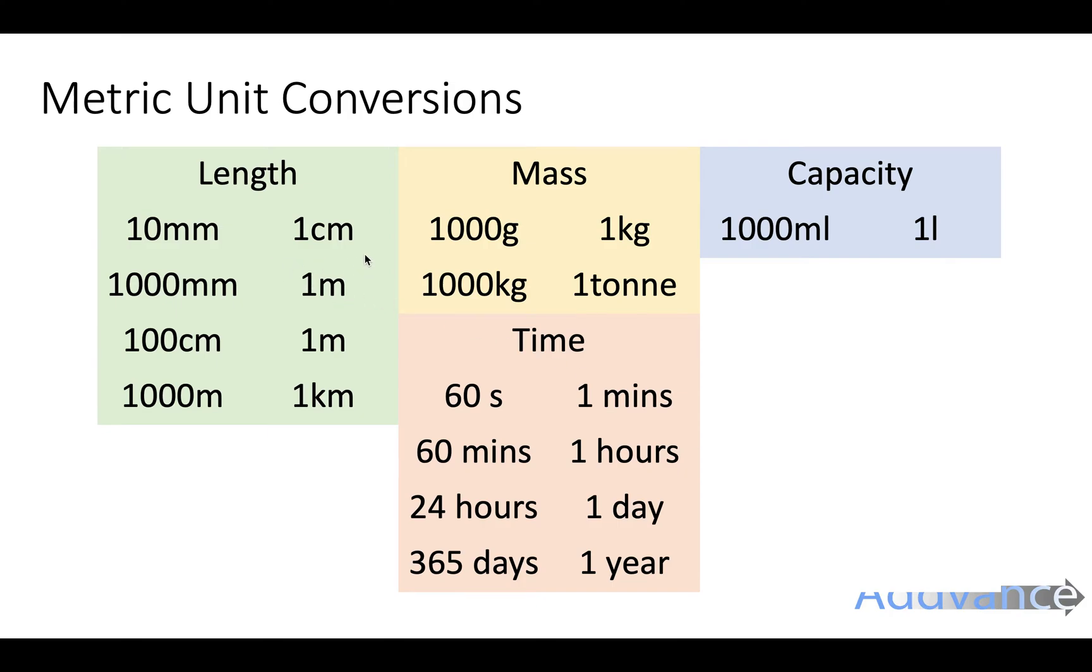You need to know that 10 millimeters is the same as one centimeter. A thousand millimeters is one meter. A hundred centimeters is one meter. A thousand meters is one kilometer. One kilogram is the same as 1000 grams. 1000 kilograms is the same as one ton. For time, 60 seconds is one minute, 60 mins is one hour, 24 hours is one day, and 365 days is one year.